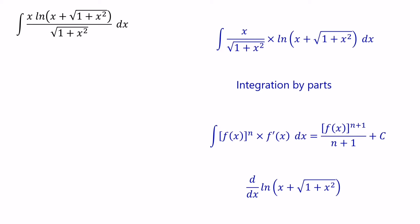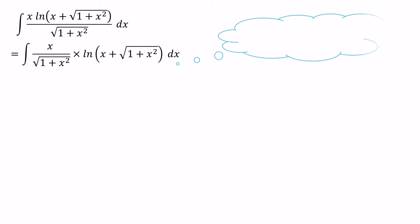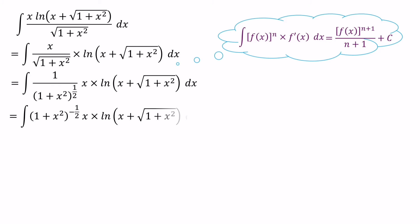Let's jump into the question. Let's consider x over square root (1 plus x squared). To get the integral of this value, we use the equation: integral of f(x) to the power of n times f'(x) equals f(x) to the power of n plus 1 over n plus 1. Now, the square root of (1 plus x squared) we can write as (1 plus x squared) to the power of half. Then we can write the value from the numerator as (1 plus x squared) to the power of minus half. So f(x) equals (1 plus x squared) and n equals minus half.